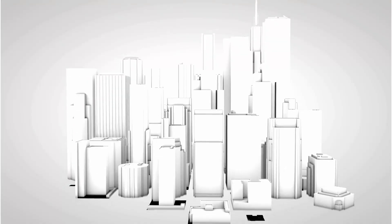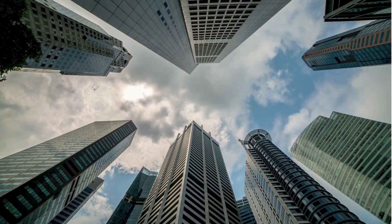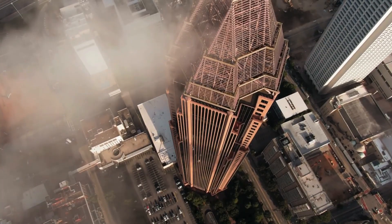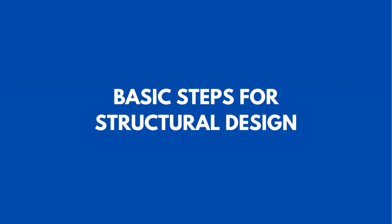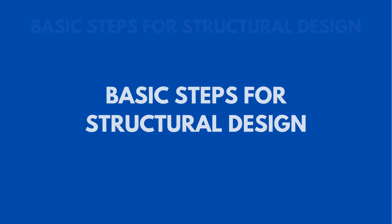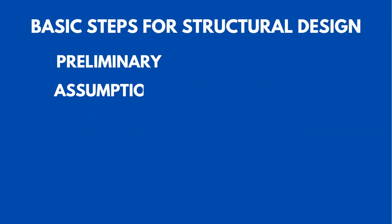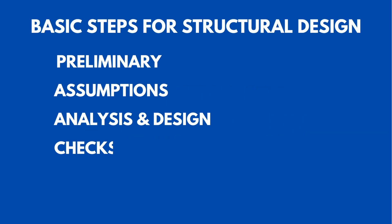Structural engineers turn architectural designs and concepts into safe, functional, and durable structures that can withstand all nature forces and applied loads. I have grouped the process of structural design into five stages: the preliminary stage, making assumptions stage, the main analysis and design stage, final checks, and preparing the design presentation. Let's take them one by one.